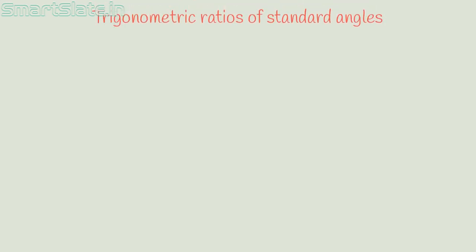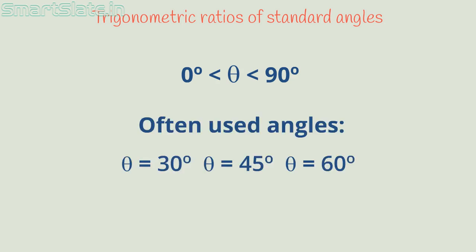In the last video, we studied trigonometric ratios of an acute angle in a right-angled triangle. An acute angle is any angle between 0° and 90°. When we construct a right-angled triangle, we often use 30°, 45°, or 60° for the acute angle. In this video, we will find the values of trigonometric ratios when angle theta is 30°, 45°, 60°, 0°, or 90°.